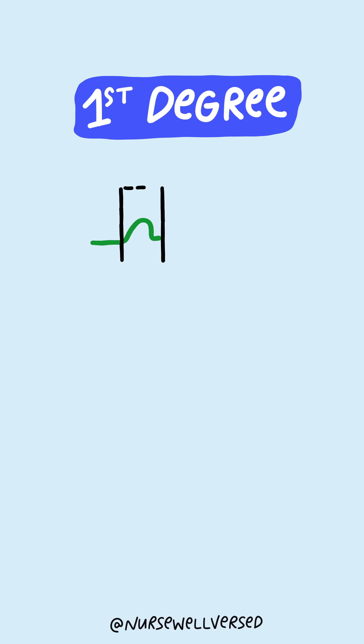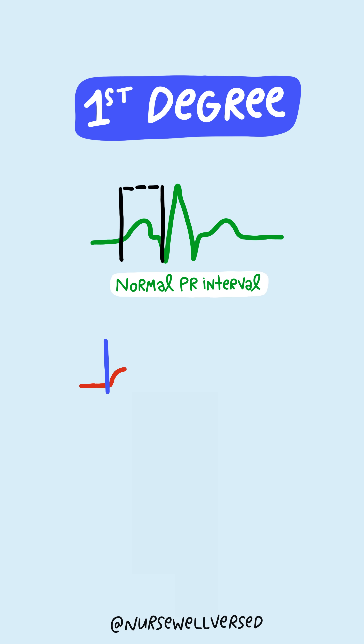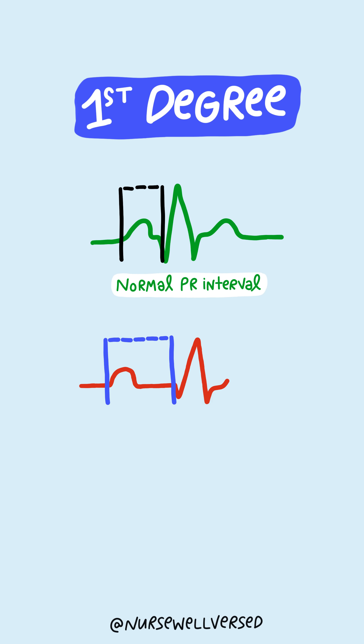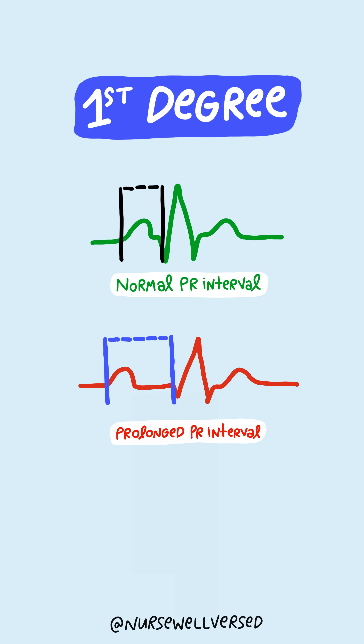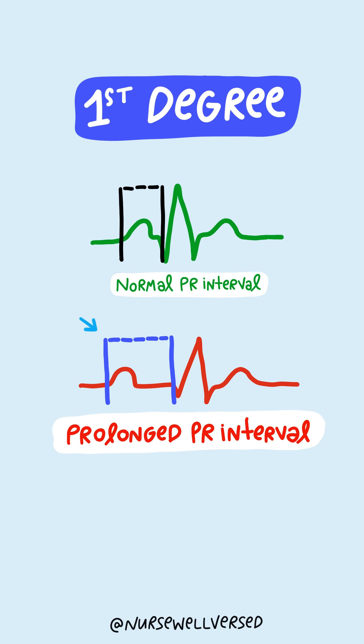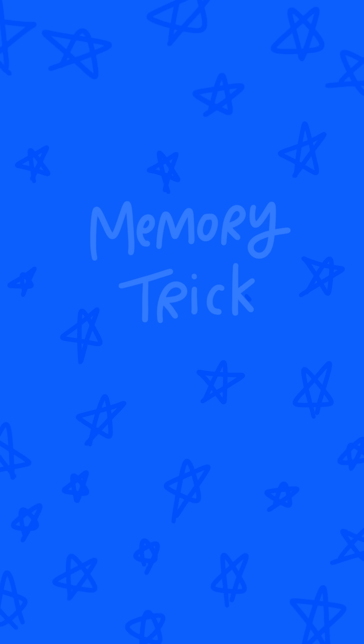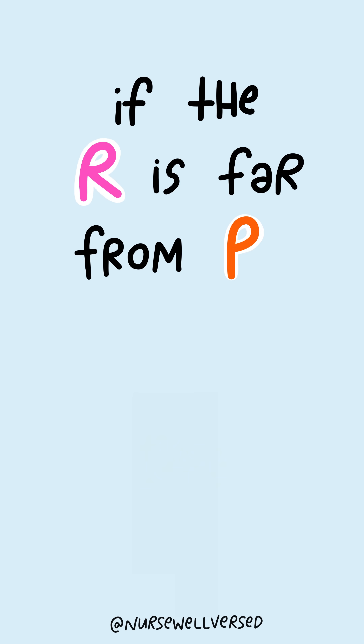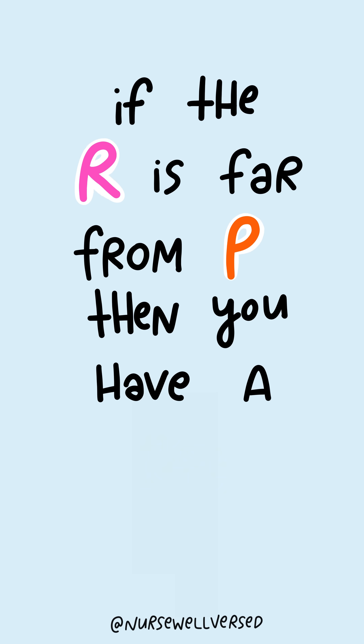A first degree heart block occurs when there's abnormally slow conduction through the AV node, and this appears on the EKG as a prolonged PR interval. A simple rhyme to remember this is: if the R is far from P, then you have a first degree.